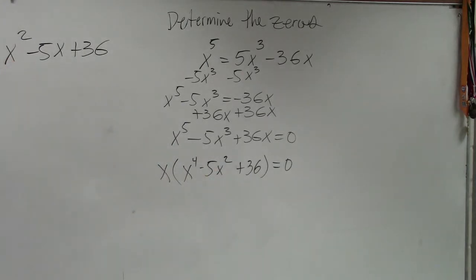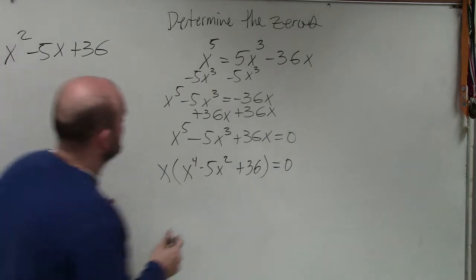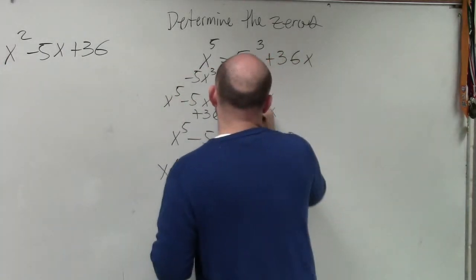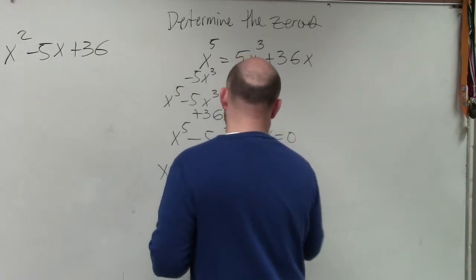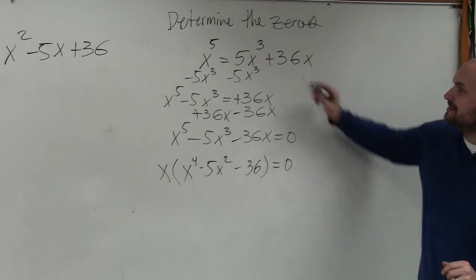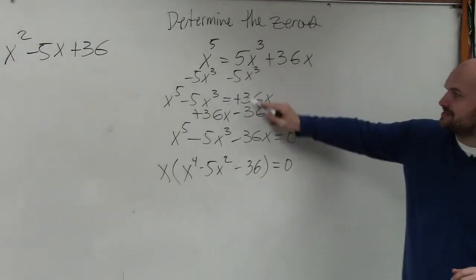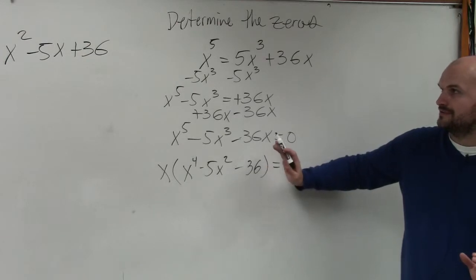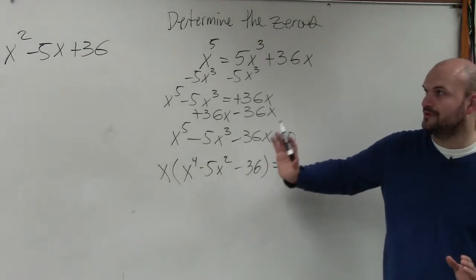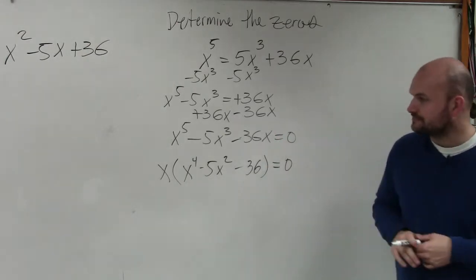So we factor it as a quadratic. So we say, all right, what two numbers - ooh, I messed up. That should have been plus. It's OK. Hold on. Are you kidding? Sorry. So that's a positive 36x. So that becomes a negative, negative, negative. Nine times four. Good.